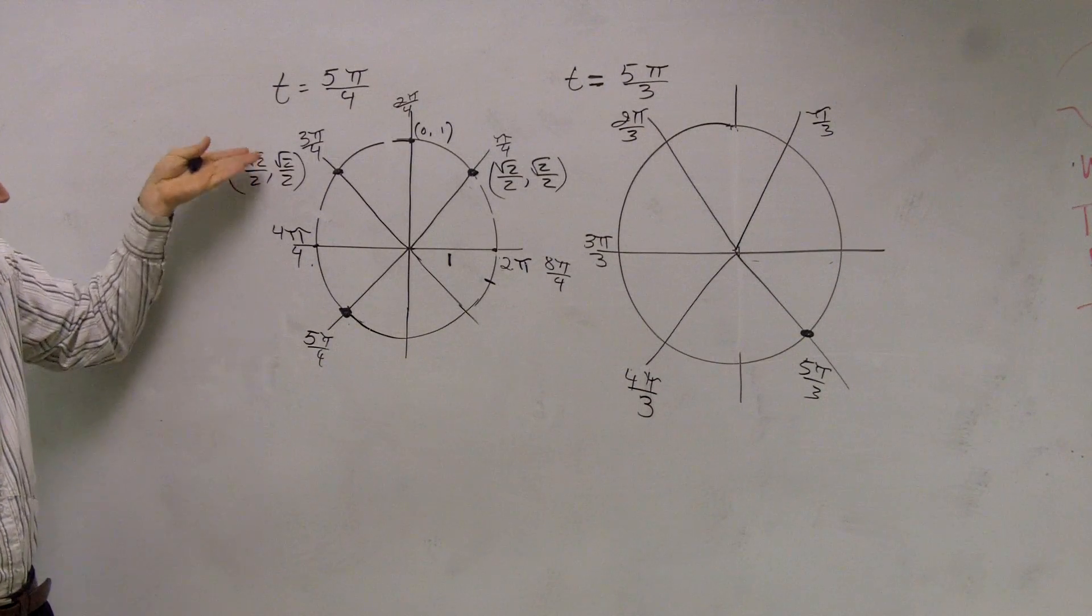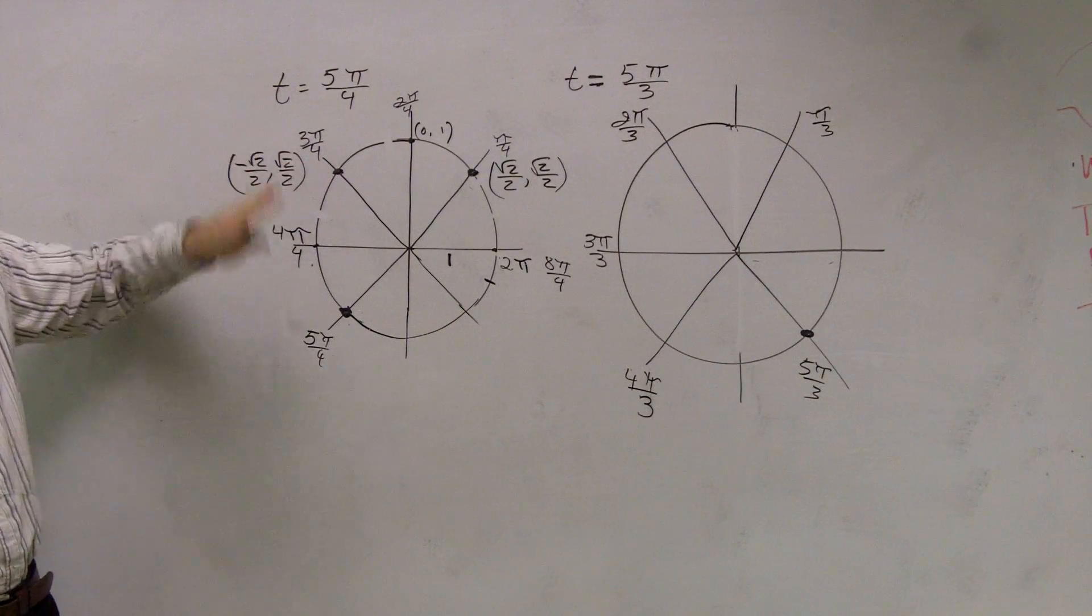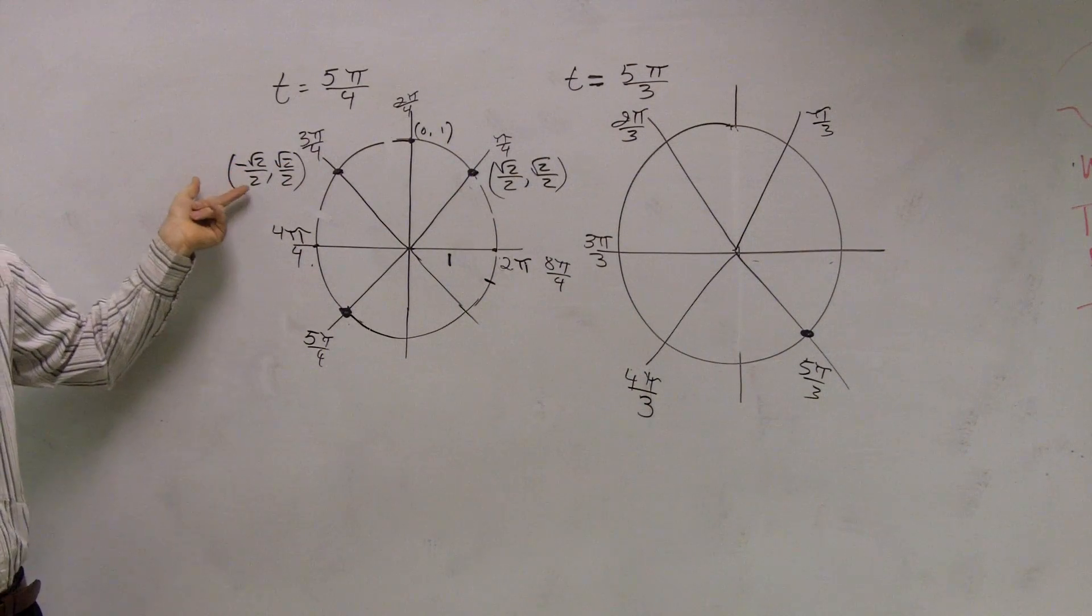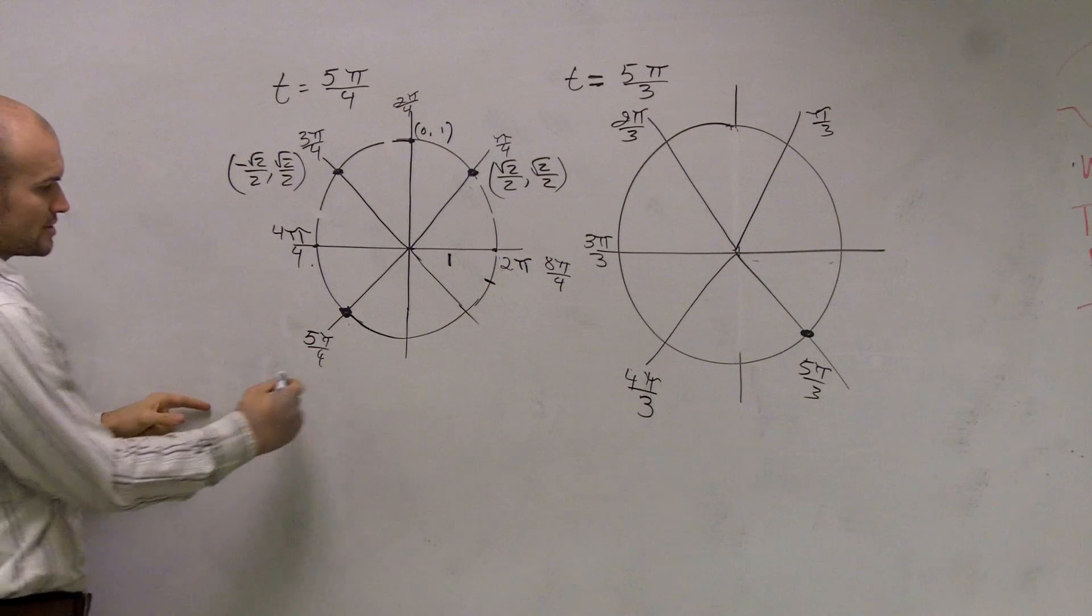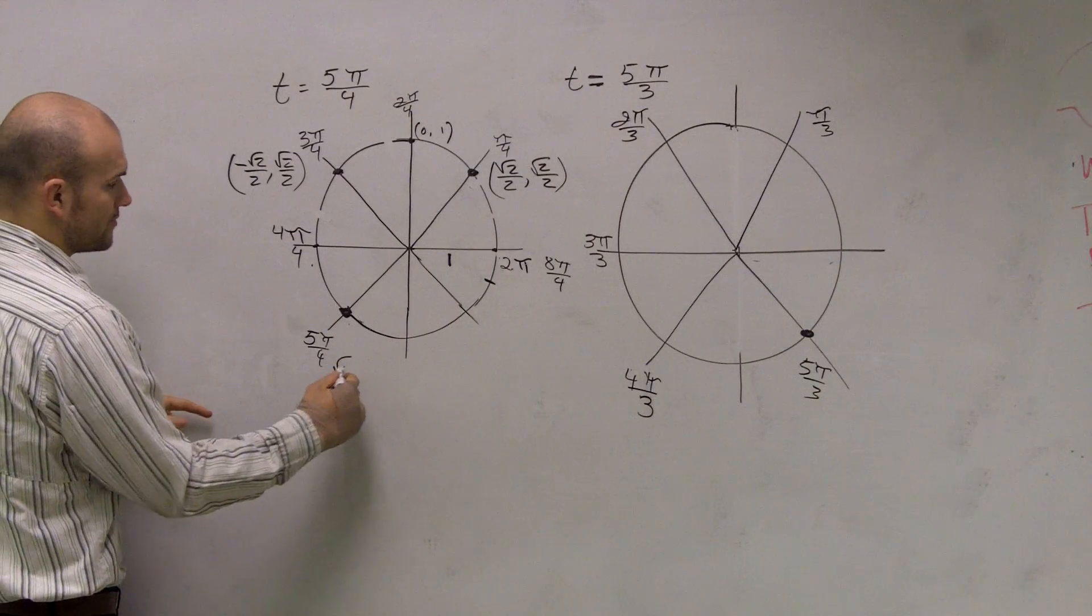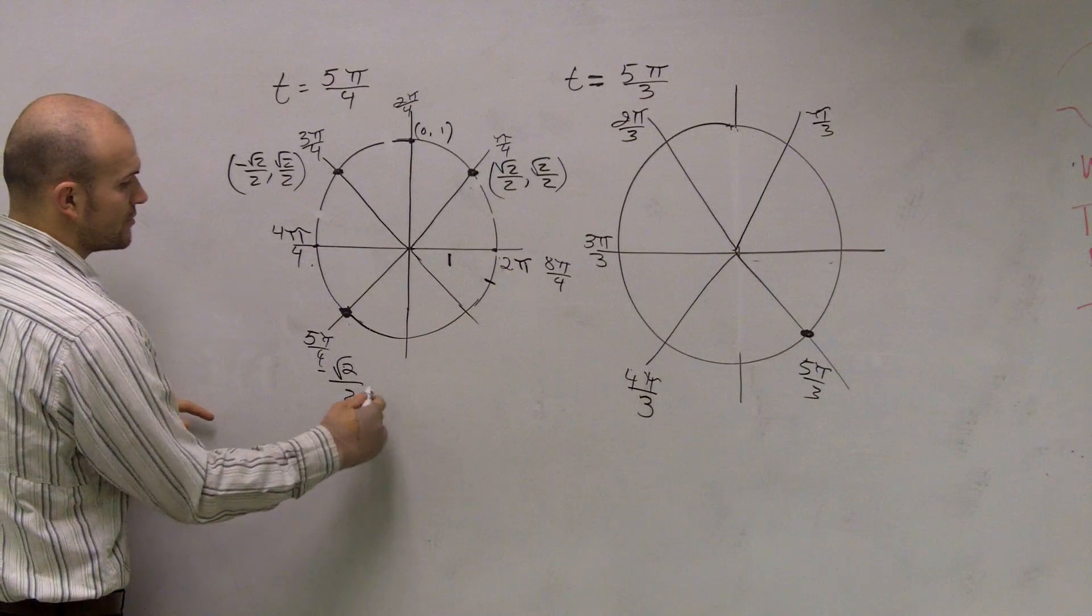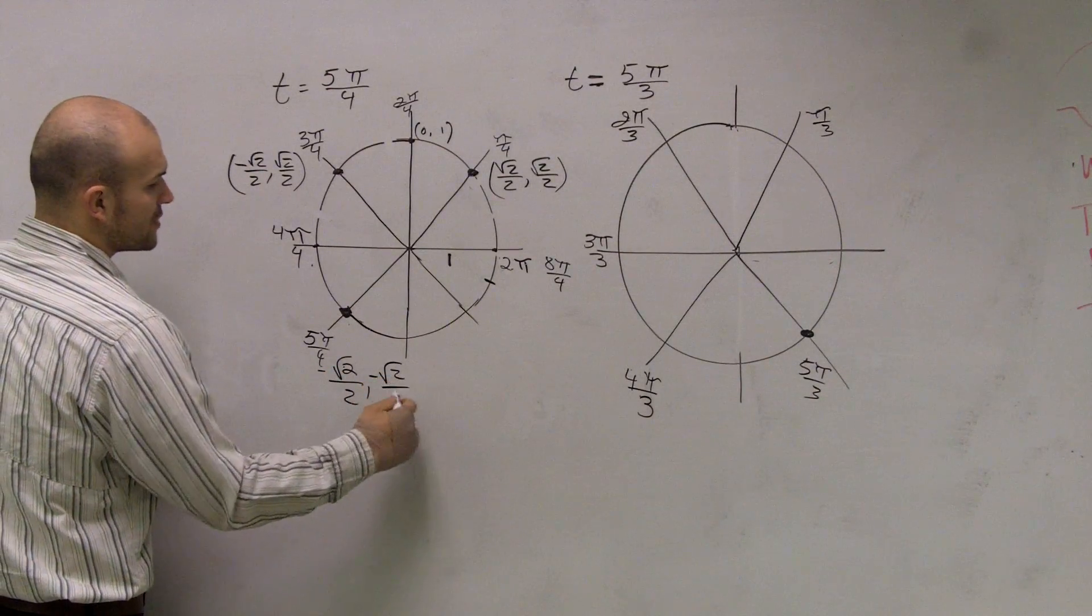So now if I want to reflect it over my x-axis, now my x is still going to be negative, and so is my y. So this coordinate point is negative square root of 2 over 2 comma negative square root of 2 over 2.